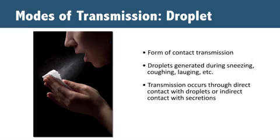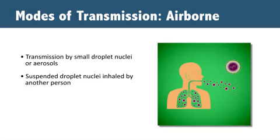Airborne spread diseases, like tuberculosis, are spread through very small infected droplets called aerosols or droplet nuclei. These very small droplets can stay suspended in the air for a very long time and can be breathed in by another person. They can be transmitted over long distances, such as an entire common room like a cafeteria.